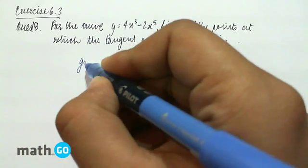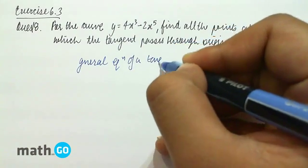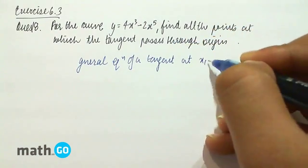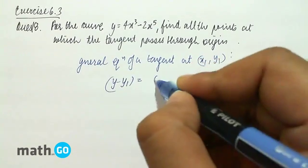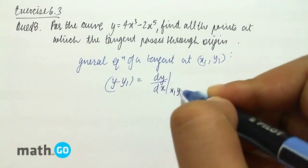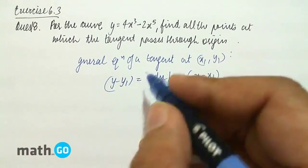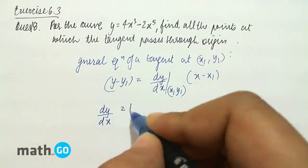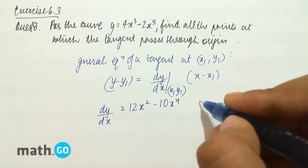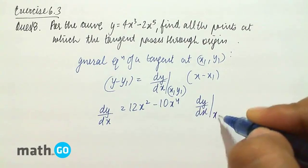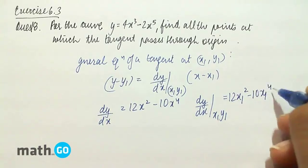Now we have the general equation of a tangent at the point (x1, y1) as y minus y1 equals dy/dx at (x1, y1) into x minus x1. So first let us find dy/dx. dy/dx equals 12x squared minus 10x to the power 4, and dy/dx at (x1, y1) equals 12x1 squared minus 10x1 to the power 4.